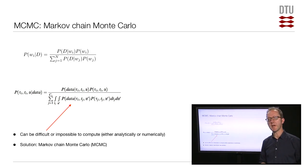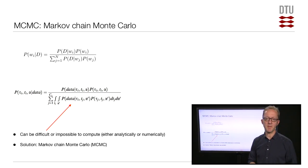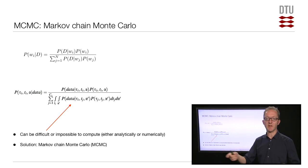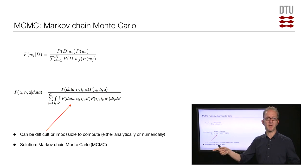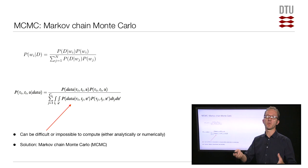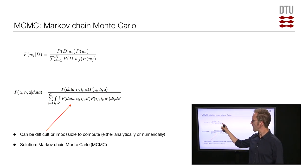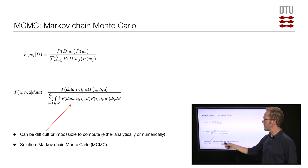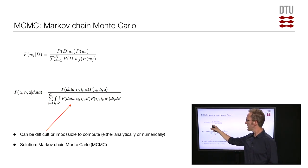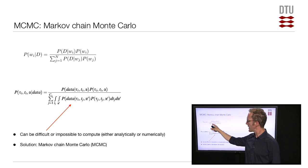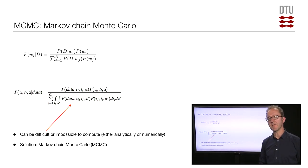However, quite often the models we are looking at do not have discrete parameter values but have continuous parameter values. For instance, branch lengths in a tree can be any possible length, so it's a continuous parameter. Same goes for nucleotide frequencies and nucleotide substitution rates. In the case of continuous parameters, instead of a sum in the denominator, we will instead have an integral.